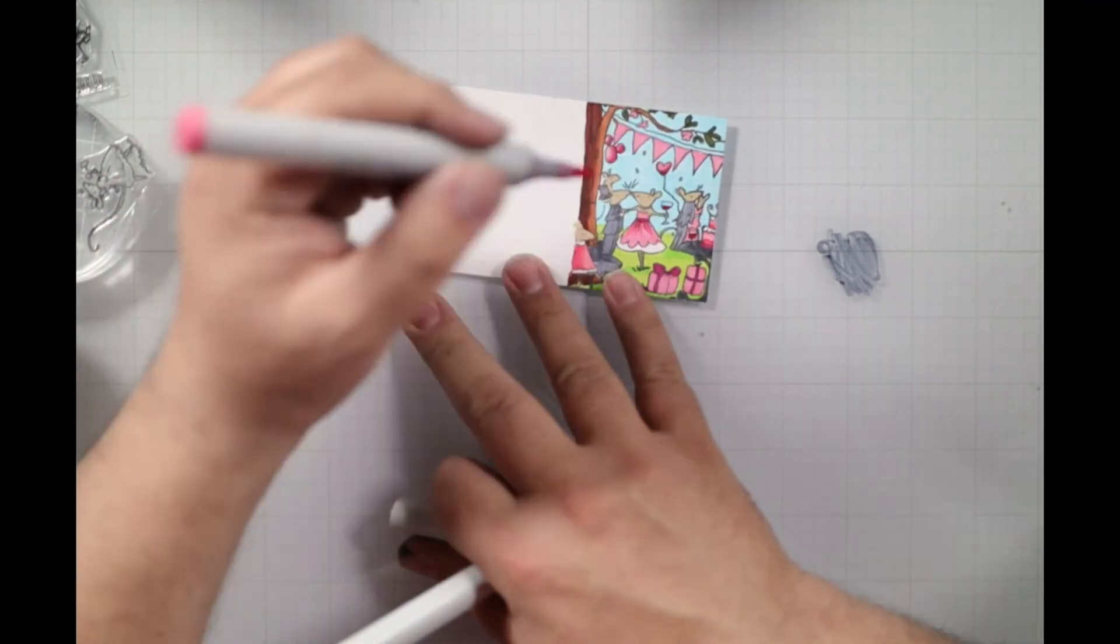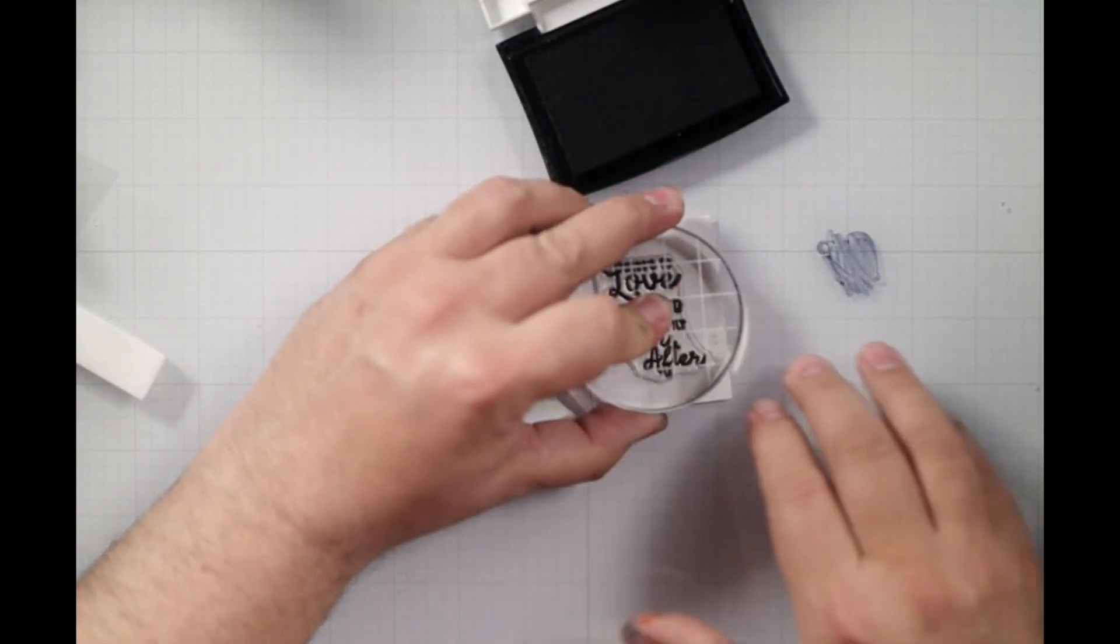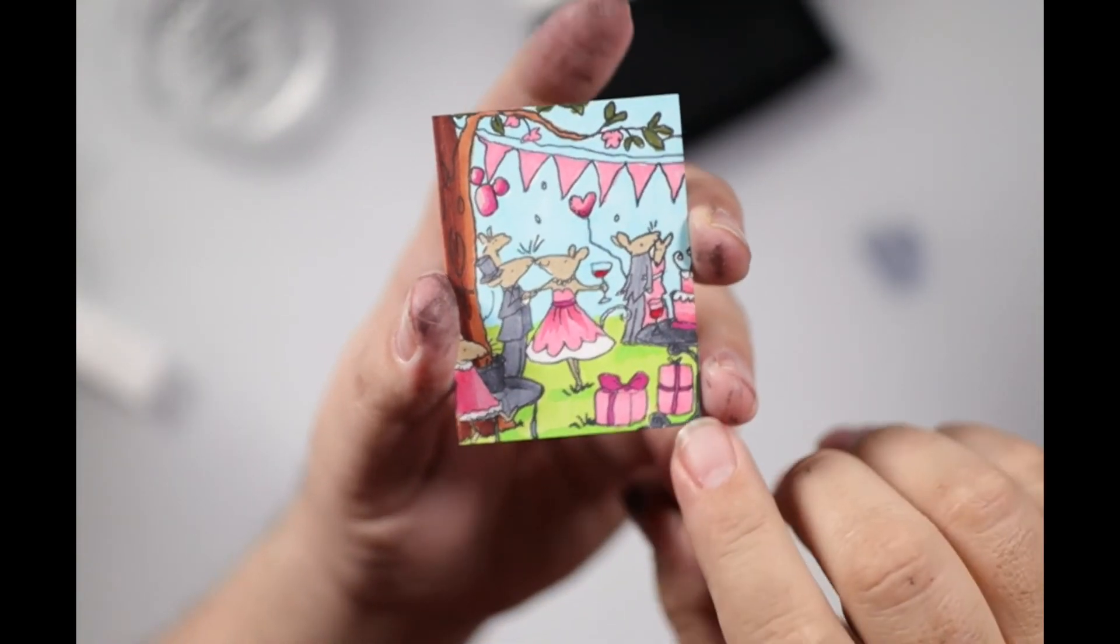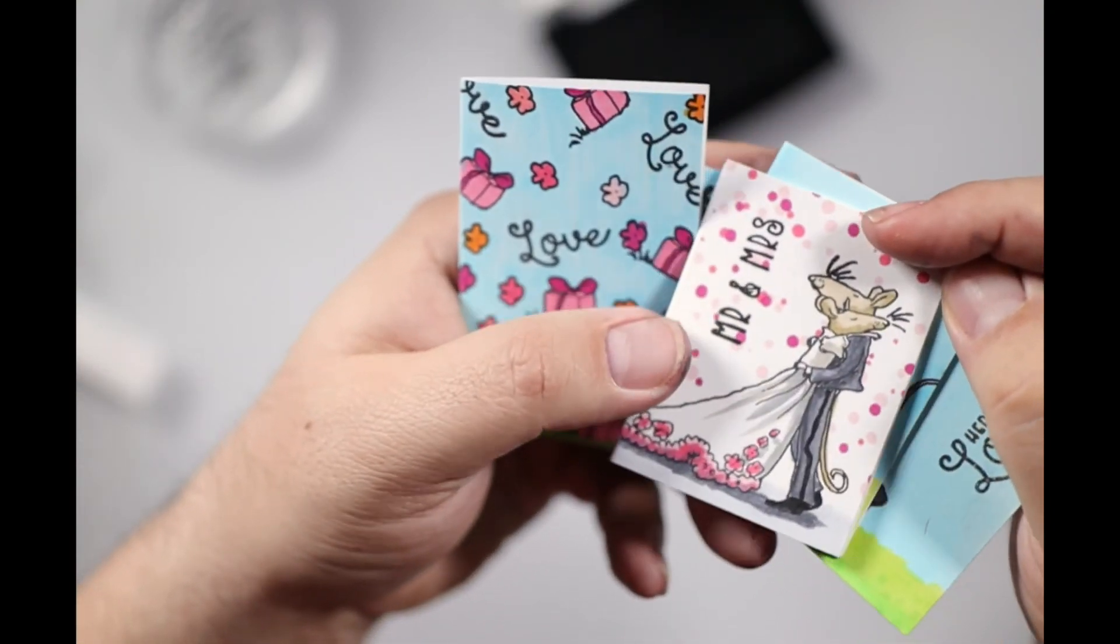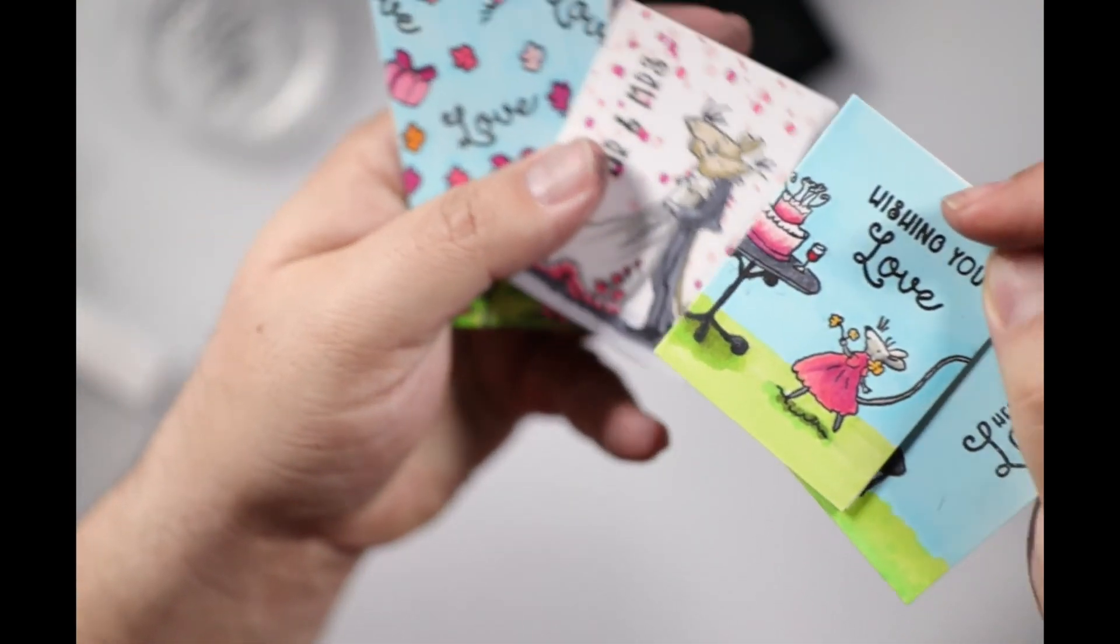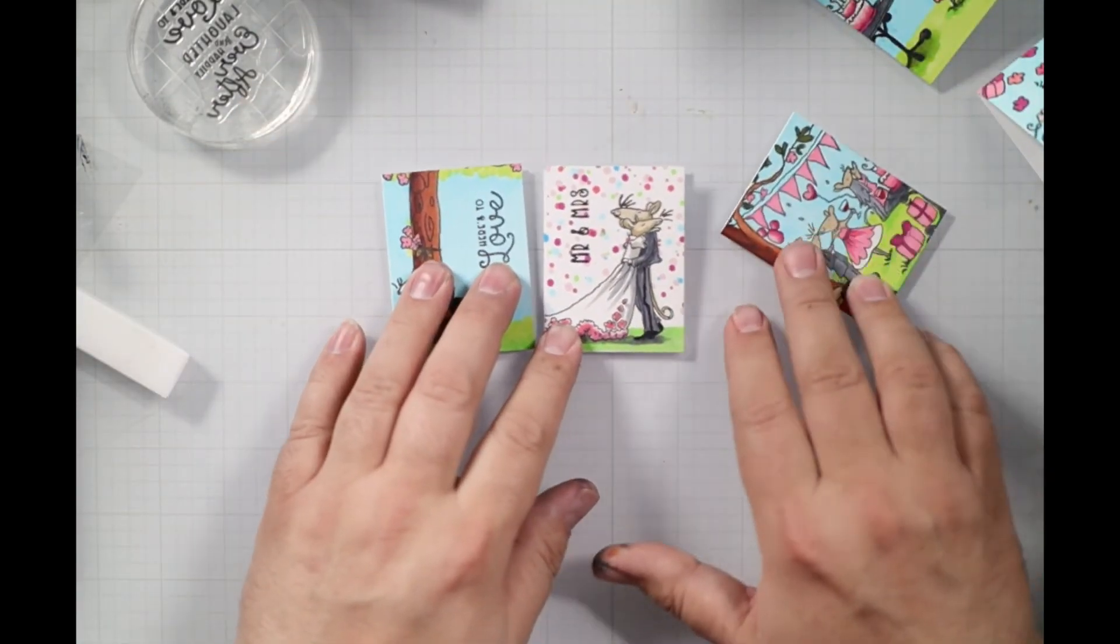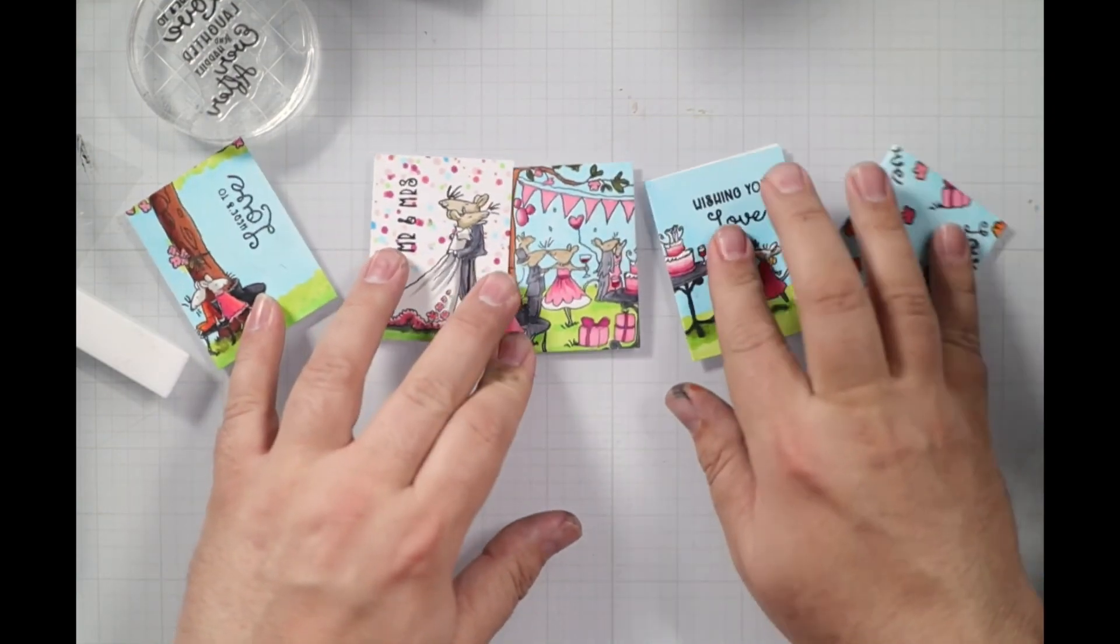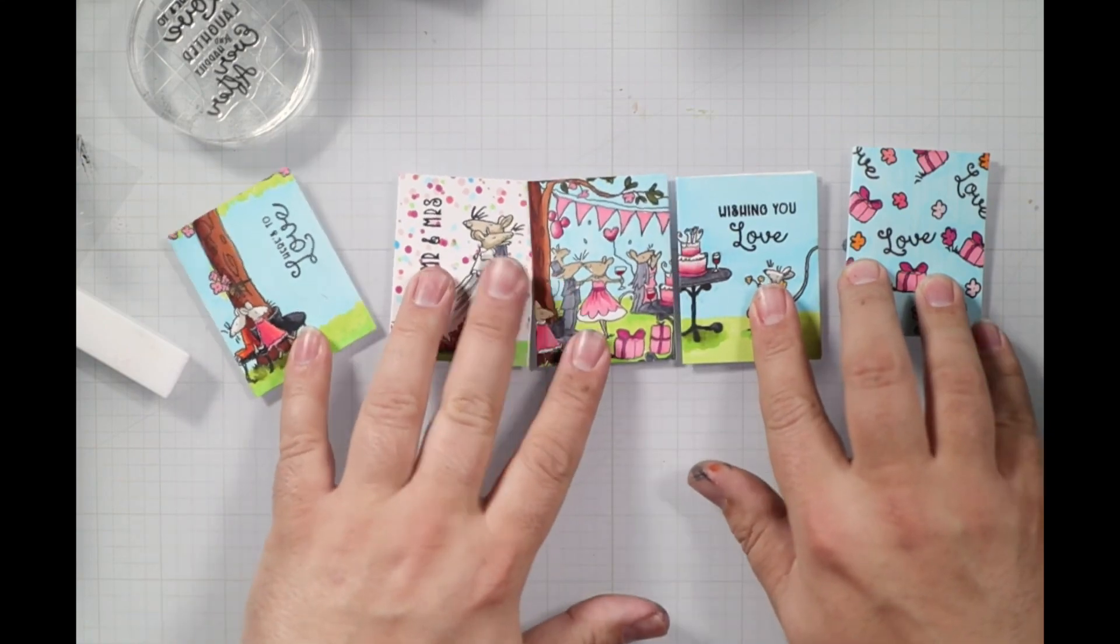I want to blend out a few different things, the cake and the dress. And then there wasn't room for a sentiment on the front, so I stamped it on the inside. Here's to love and laughter. What a great little group of cards, super fun and easy to do. So go for it guys, I hope you have some fun as well, taking your larger stamp sets and making smaller images out of them, smaller little cards. I hope you have a wonderful day, take care.